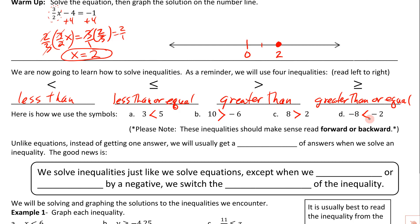8 is greater than 2. And negative 8 and negative 2 — negative 8 is further to the left on the number line, so this would be a less than. You can read these forwards and backwards: 3 is less than 5, 10 is greater than negative 6. Negative 2 is greater than negative 8; 2 is less than 8; negative 6 is less than 10; 5 is greater than 3. Whether you read left to right or right to left, it should make sense either way.